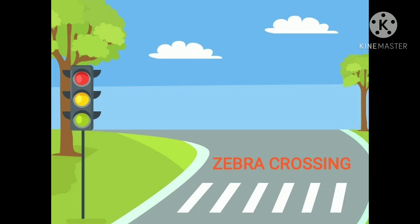Let us now learn what a zebra crossing is. An area of road that is painted with broad white stripes where vehicles must stop for pedestrians to cross the road is called the zebra crossing. In this picture you can see those white broad stripes — this is the place where you need to cross the road.